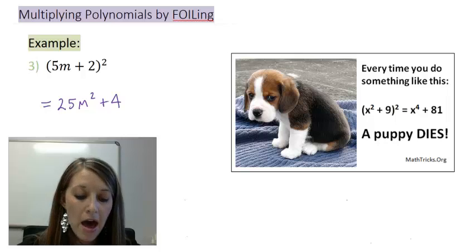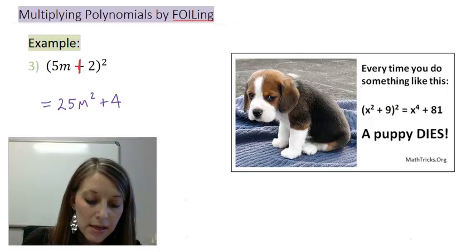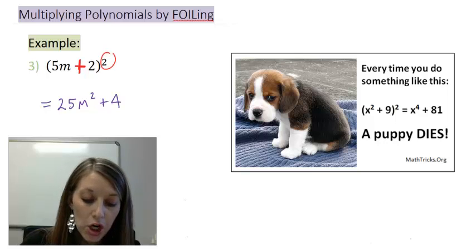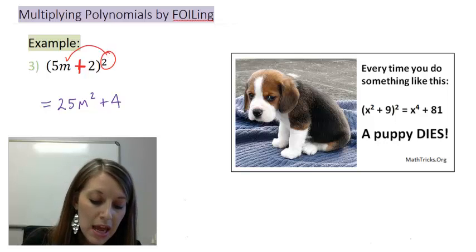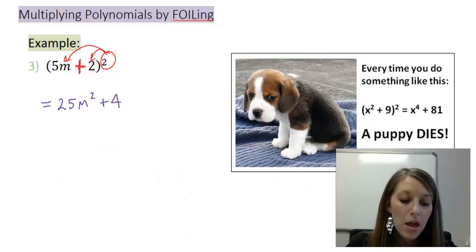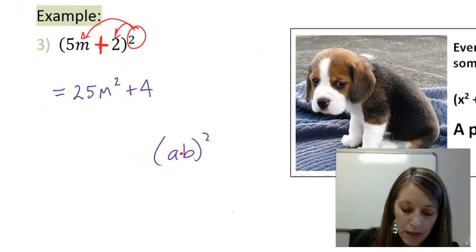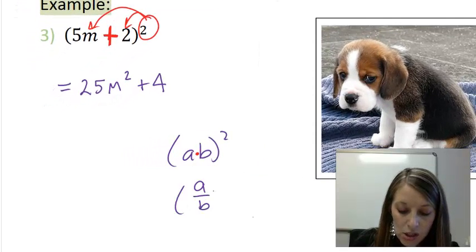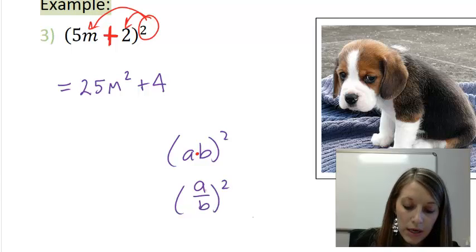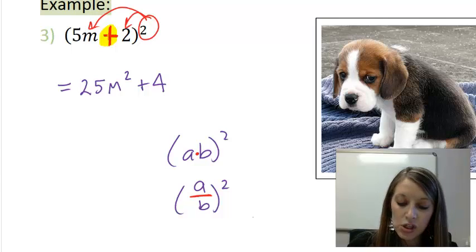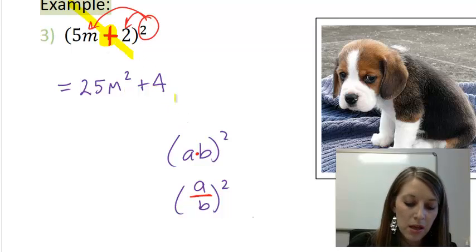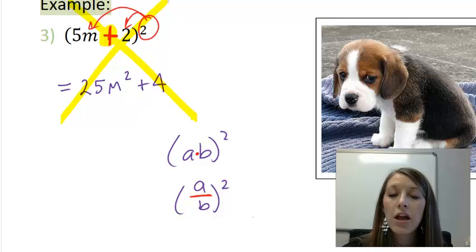When you have something plus something squared, you absolutely cannot distribute that power. Now, you can distribute that power when it is multiplication, and you can distribute that power when it is division. But you cannot distribute that power if this was an addition or if this was a subtraction problem. So, every time you do something like this, I'm going to claim that you've killed a puppy, and you've made my ultimate math pet peeve mistake.